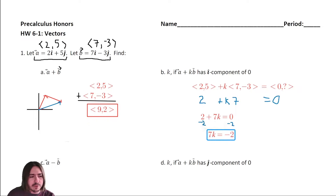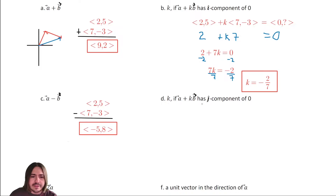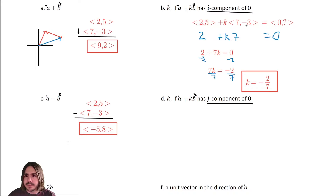Letter D is similar to B — basically finding K — but this time we're looking for the j-component to be zero, whereas in letter B we were looking for the i-component to be zero. In this case we don't care what the i-component is; we only care that j equals zero.